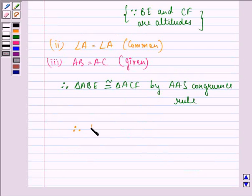Therefore, BE becomes equal to CF by CPCT, that is congruent parts of congruent triangles.